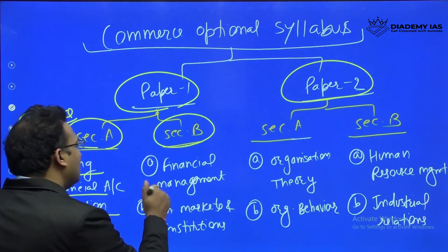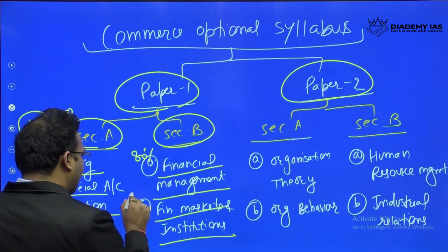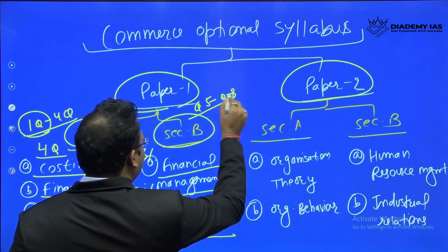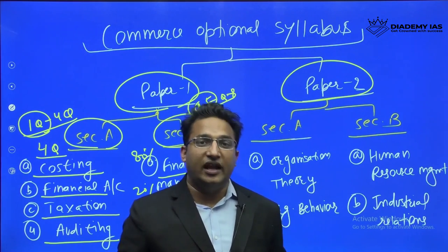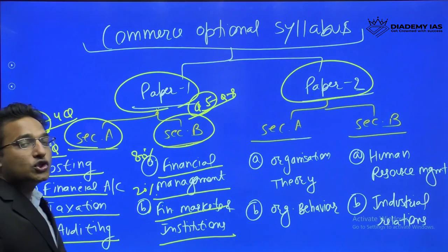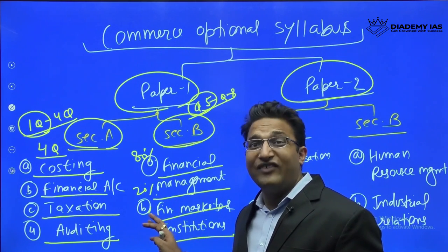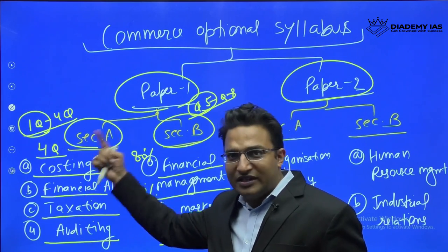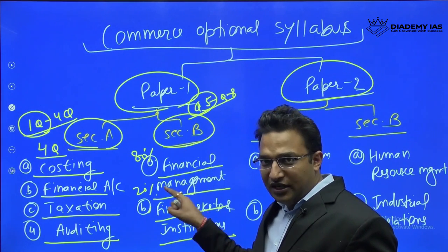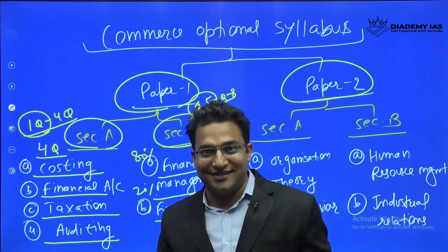In Section B of Paper 1, Financial Management is most important — it occupies about 80% — and Financial Markets and Institutions occupies about 20%. Questions 5 to 8 appear in Section B; Question 5 is compulsory and from Questions 6, 7, and 8 you choose minimum one and maximum two questions. In total, across Section A and B, you must answer five questions — minimum two from each section and maximum three from each section.